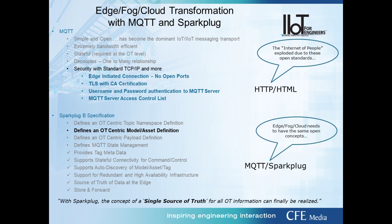The Internet of People took off because of two things: an open transport called HTTP, and an open representation called HTML. We need that same notion in the Industrial Internet of Things. We already have a free, open, international-standards MQTT transport, and now with Sparkplug we have a definition of what is being published and on what topic. With Sparkplug, the concept of a single source of truth for all OT information can finally be realized, giving us Edge, Fog, and Cloud where everything can be interoperable.